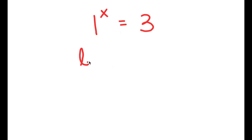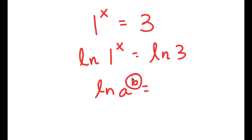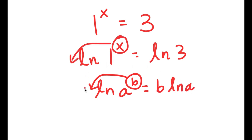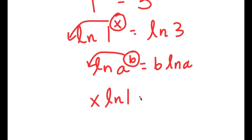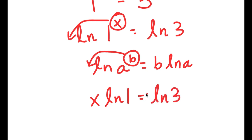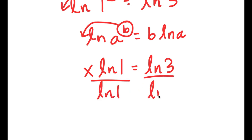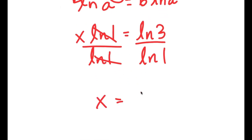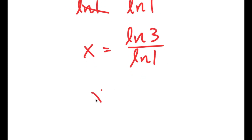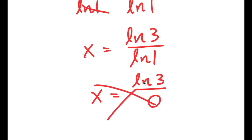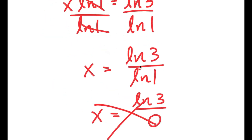The first thing I would do is take the natural log on both sides, giving ln of 1 to the power of x equals ln 3. Using the logarithm power rule, I can move x to the front: x times ln 1 equals ln 3. Dividing both sides by ln 1, I get x equals ln 3 over ln 1. But ln 1 equals 0, so this gives x equals ln 3 over 0, which is undefined — meaning there is no real solution. So that method doesn't work.